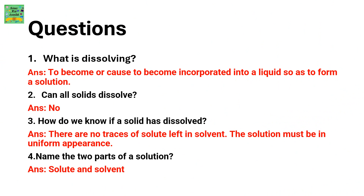Here are the answers for the first four questions. What is dissolving? To become or cause to become incorporated into a liquid so as to form a solution. Can all solids dissolve? No, all solids cannot dissolve. How do we know if a solid has dissolved? There are no traces of solute left in the solvent. The solution must have a uniform appearance, or homogeneous mixture.